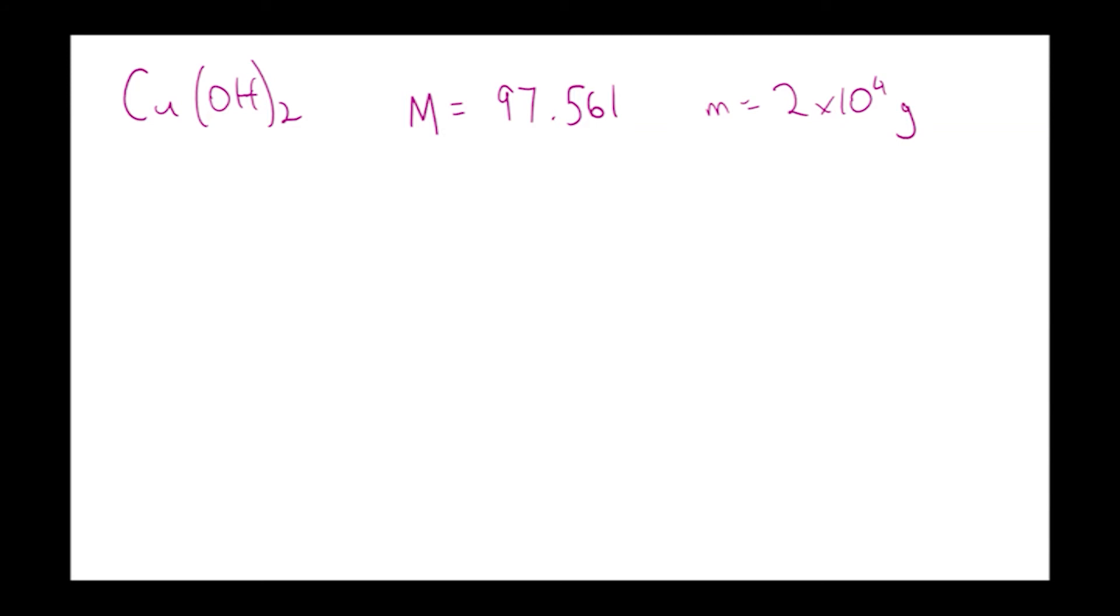So again, number of moles equals mass over molar mass. So you've got your 20,000—it's really important that your mass is there properly. You could put 2 times 10 to the 4 as well if you want. And you divide it by the molar mass of 97.561, you end up with the value of 205 moles. All you've got to do—this value here, calculating the molar mass off the periodic table, is the main one that you need to do. Make sure you can do this conversion using scientific notation.